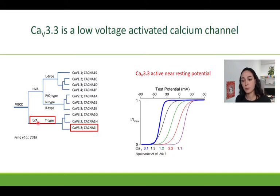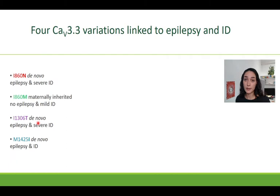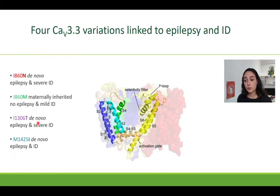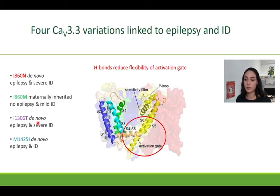So far, Cav3.3 has only been linked to schizophrenia, but here in this paper we studied four mutations found in patients with epilepsy and/or intellectual disability. All mutated residues are located in or around the activation gate and introduce H-bonds that reduce the flexibility of the activation gate.